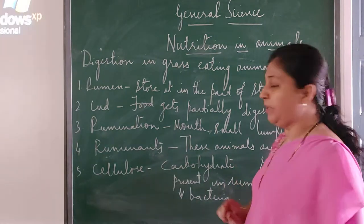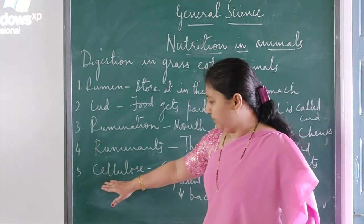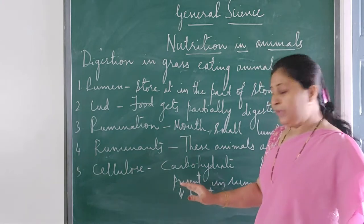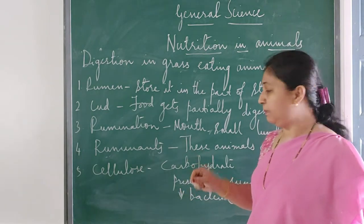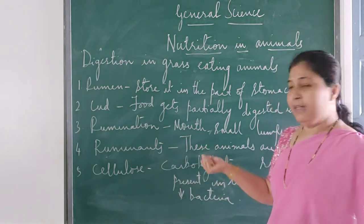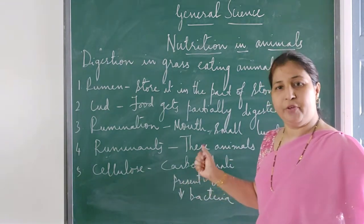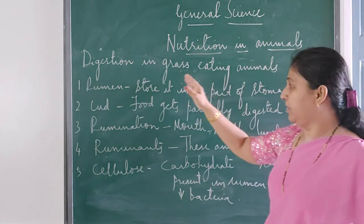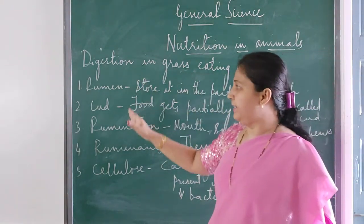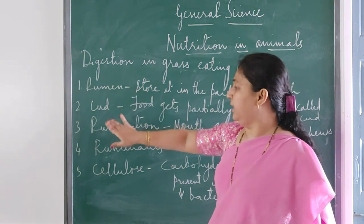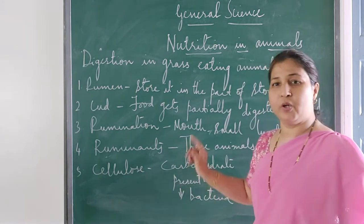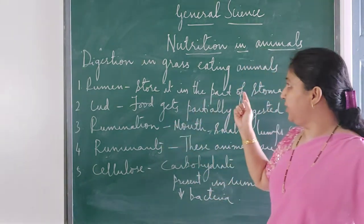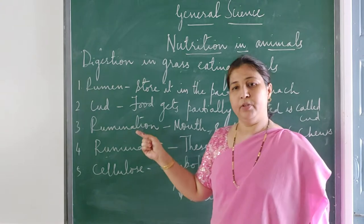These animals are called ruminants. What is cellulose? Cellulose is a carbohydrate present in some animals, and bacteria present in the rumen help to digest the cellulose. All these animals have cellulose so they are able to digest it. But we human beings do not have the cellulose-digesting bacteria, so we cannot digest it. Now let us understand digestion in grass-eating animals — how it takes place.